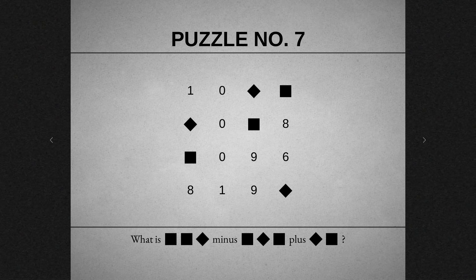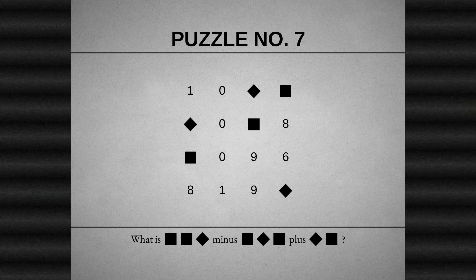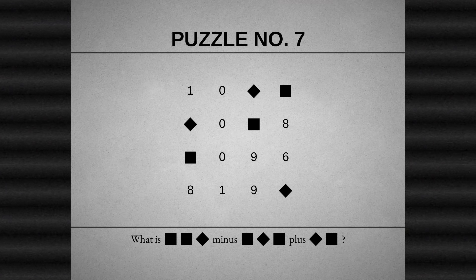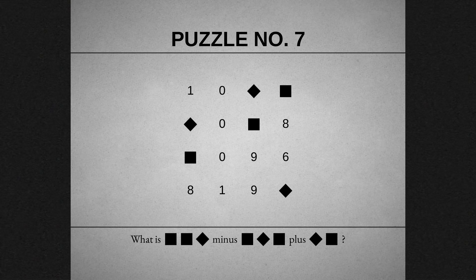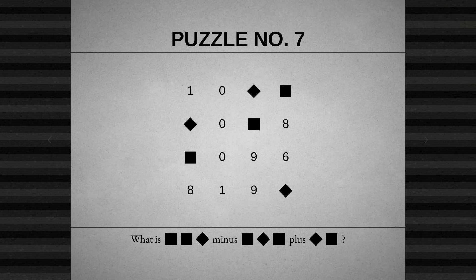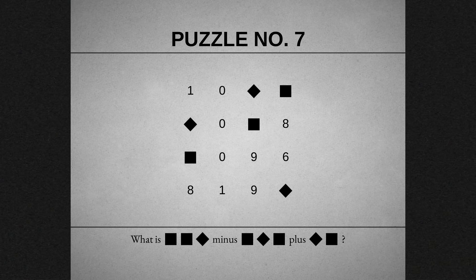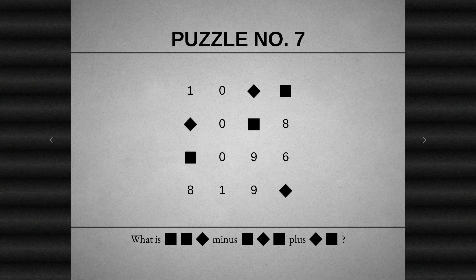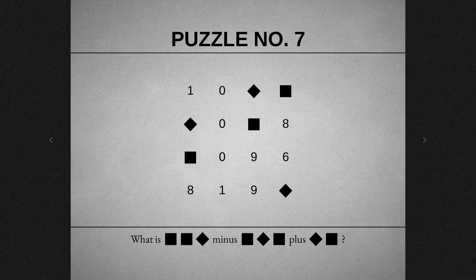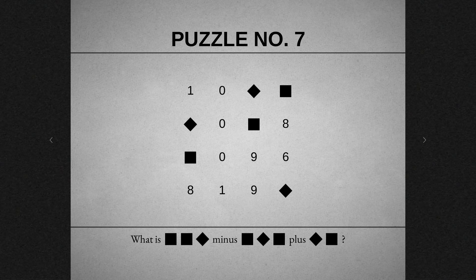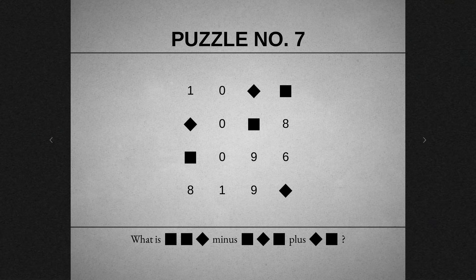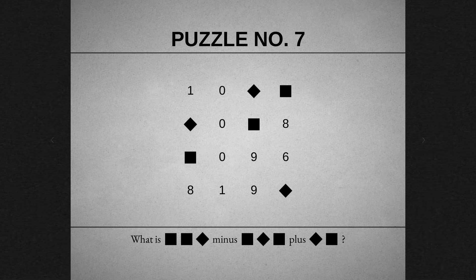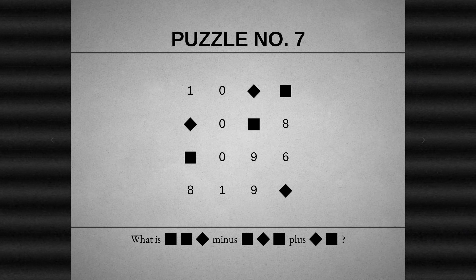But I also wouldn't expect them to be double digit numbers. So then maybe diamond's bigger. But it's not going to be big enough to make square not have to be a dual digit number because of that first row. I don't think I get this one. Let's move on.